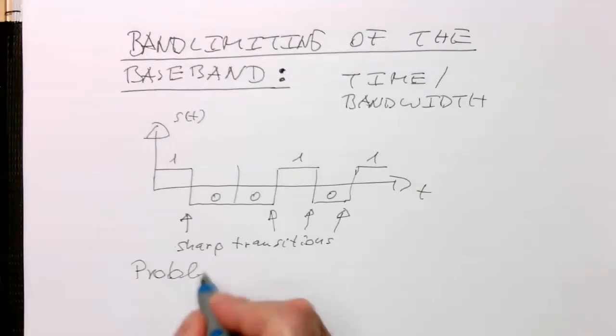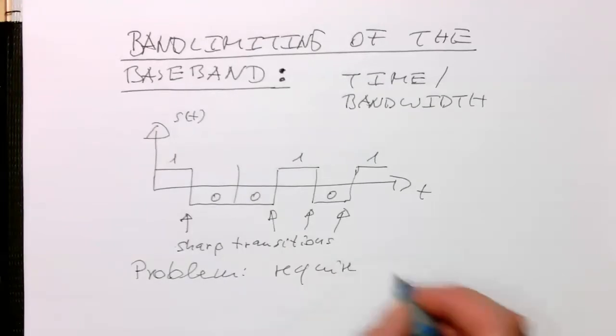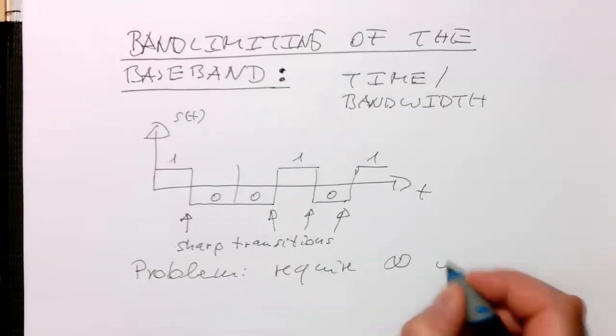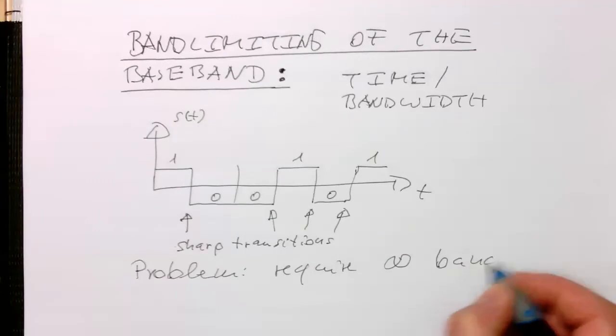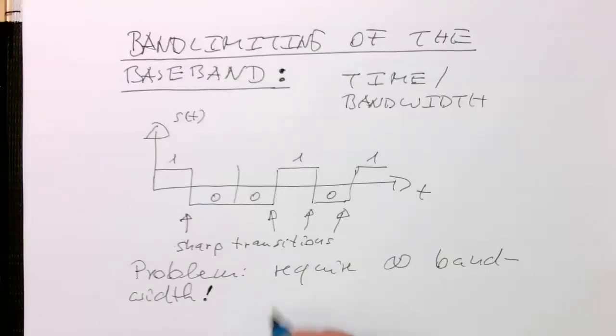And so the problem with this is, they require infinite bandwidth. Obviously, every, more or less every transmission channel we have in RF has a very limited bandwidth. Think of FM radio, for example, where every channel also has 100 kilohertz bandwidth. For example, television, maybe five megahertz or something like that.